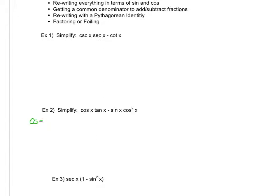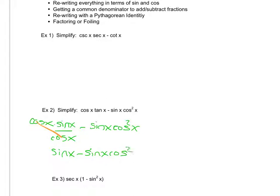I already have cosine of x. I can say tangent x becomes sine x over cosine x, minus sine of x cosine squared x. The next thing I notice is that I have this common factor of cosine of x, so I'm going to go ahead and cancel those out. I'm going to be left with sine of x minus sine x cosine squared x.